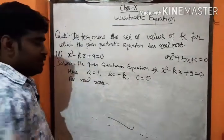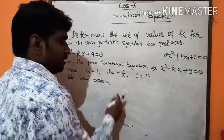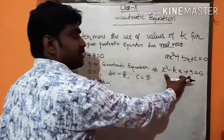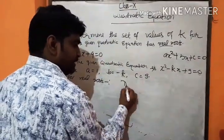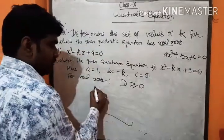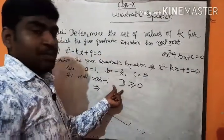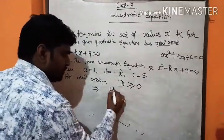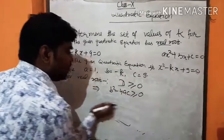Now, for real roots, we know that the discriminant of the given quadratic equation, which is denoted by D, is greater than or equal to 0. Where D equals b squared minus 4ac. So, we have b squared minus 4ac greater than or equal to 0.